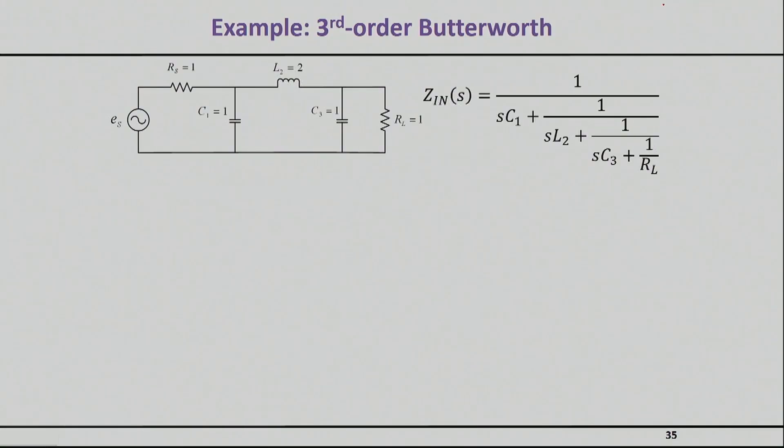I'm going to show you a third order Butterworth example which can be synthesized using conventional design techniques like the ones we discussed last time. You might end up with an LC ladder something like this. The question here is how do we go from this LC ladder to the ladder with inverters.